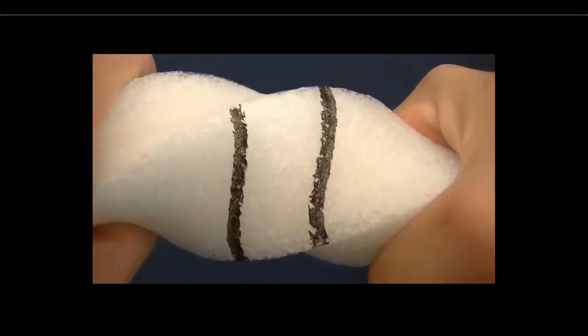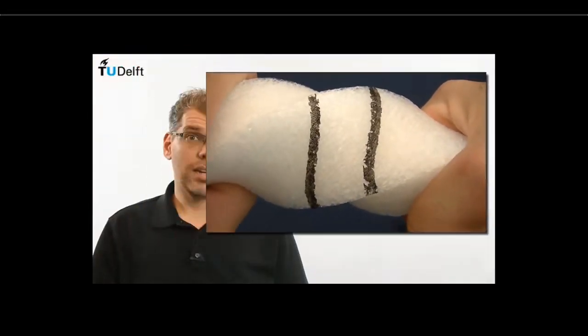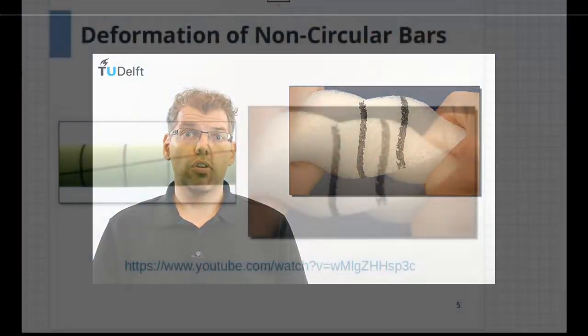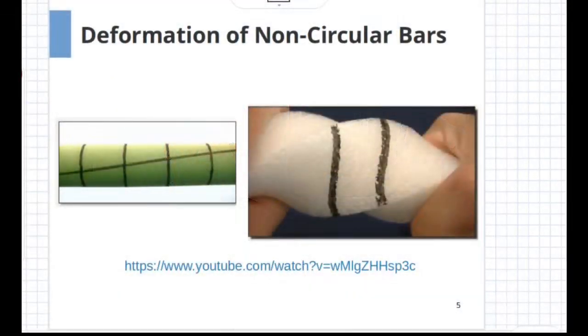This is an indication that the assumptions that we made for circular shafts that those planes remain in plane do not hold. The main difference between a circular shaft and a non-circular shaft is in terms of the behavior of cross-sections.